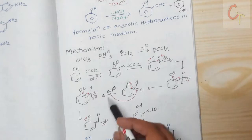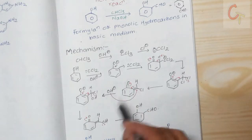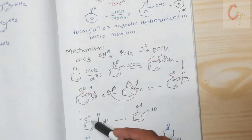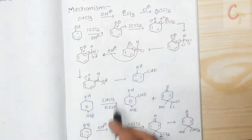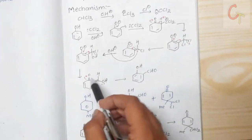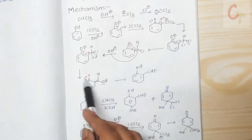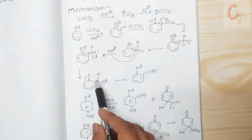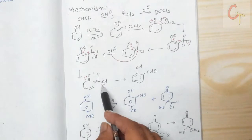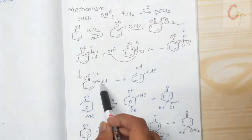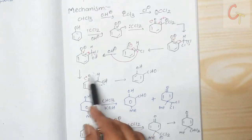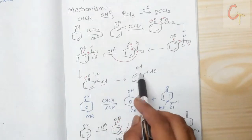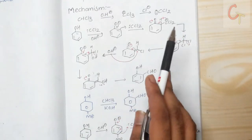In the next step, the double bond migrates toward oxygen, creating a negative charge. The lone pair on oxygen migrates, forming an aldehyde group. The oxygen acquires a negative charge, which then abstracts a proton, giving the ortho-substituted product — ortho-salicylaldehyde.